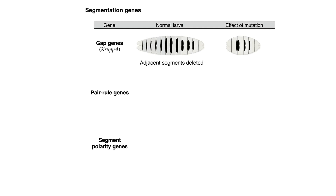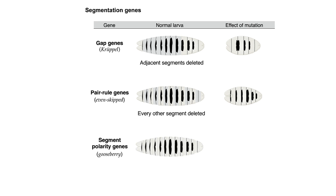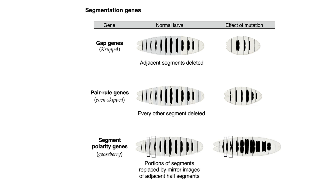Mutations in the pair rule genes — which include hairy, even-skipped, runt, and fushi tarazu — result in the deletion of some part of the pattern in every other segment. Mutations in the segment polarity genes — which include engrailed, hedgehog, armadillo, and gooseberry — result in portions of segments being replaced by mirror images of adjacent half segments.